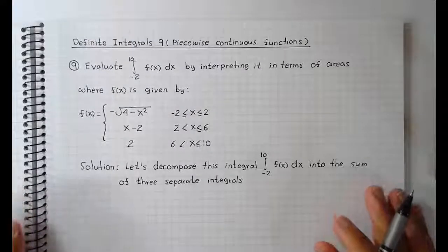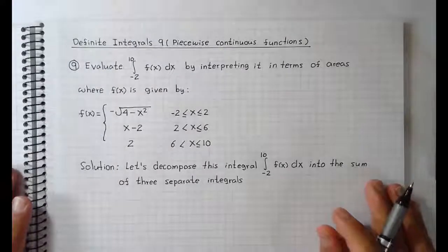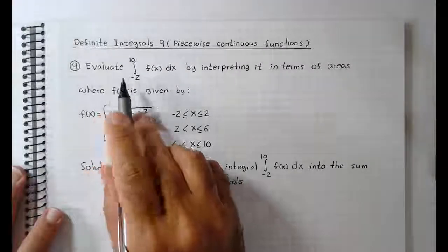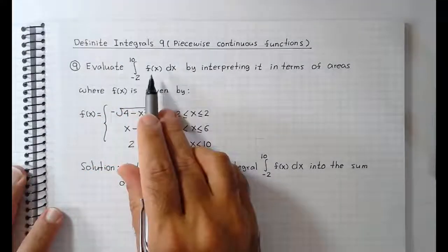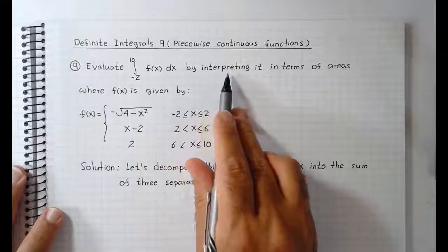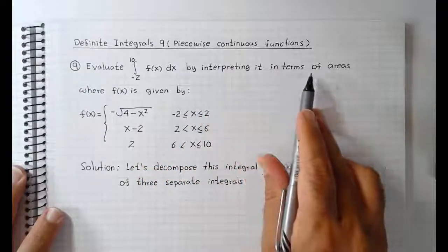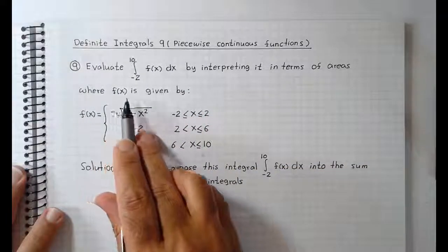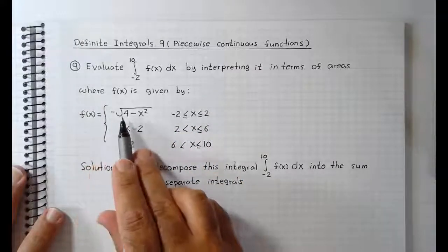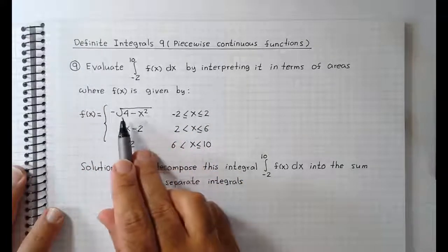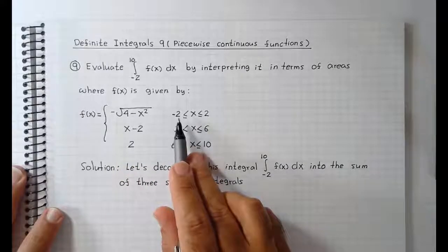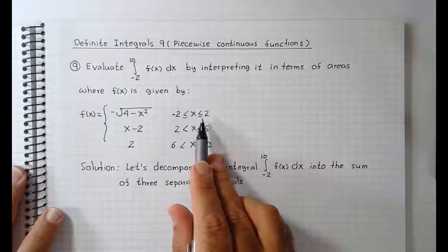This video will cover the definite integral of a piecewise continuous function. Evaluate the integral from minus 2 to 10 of f dx by interpreting it in terms of areas, where f is equal to minus root of 4 minus x squared. This is a semicircle below the x-axis on the interval from minus 2 to 2.